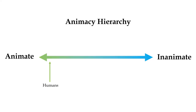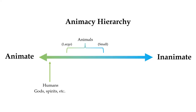By far the most likely nouns to end up at the top of the animacy hierarchy and to get special treatment over other animate nouns are those that refer to humans, which isn't too surprising since humans are naturally quite anthropocentric and are fond of having their languages centre around themselves. Also, gods, spirits, or other supernatural beings will usually be grouped into the same category of animacy as humans. The prototypical examples of non-human animate nouns are animals, but some animals, especially large ones that the speakers interact with on a frequent basis, may be considered more animate than small or less notable animals.